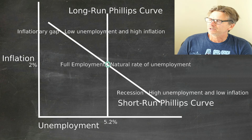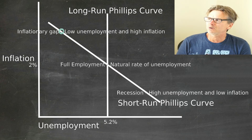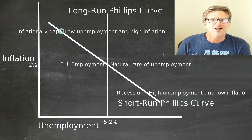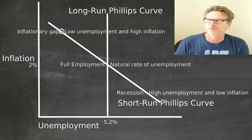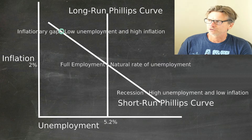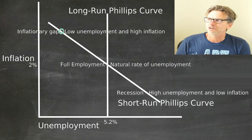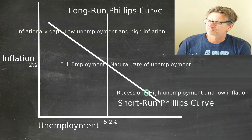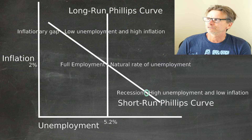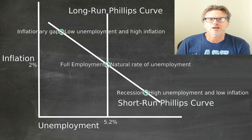At the top of the curve, you have an inflationary gap — that's the point where you have low unemployment and high inflation. You need to identify that point on a graph on the short-run Phillips curve. On the other side, towards the bottom, is the recessionary gap — that's high unemployment and low inflation. So you have three points on the Phillips curve: inflationary gap, full employment, and recessionary gap. On an exam or test, you need to identify where these three points are.